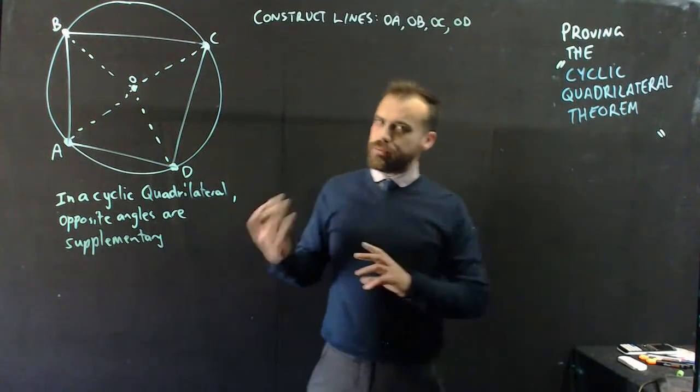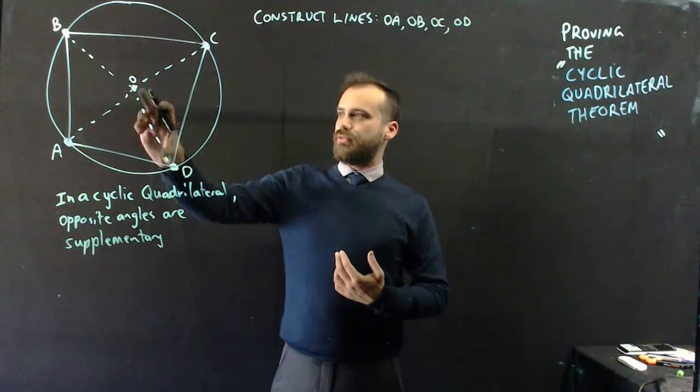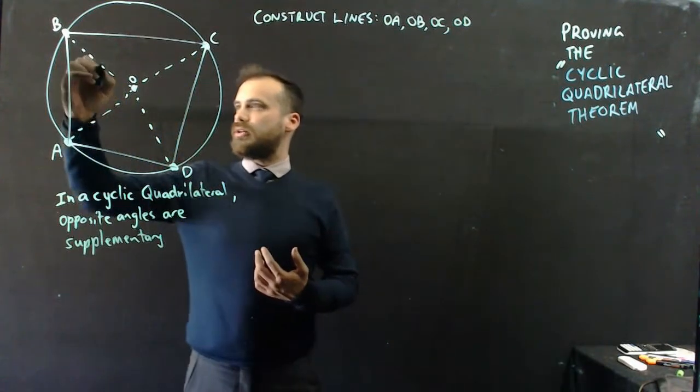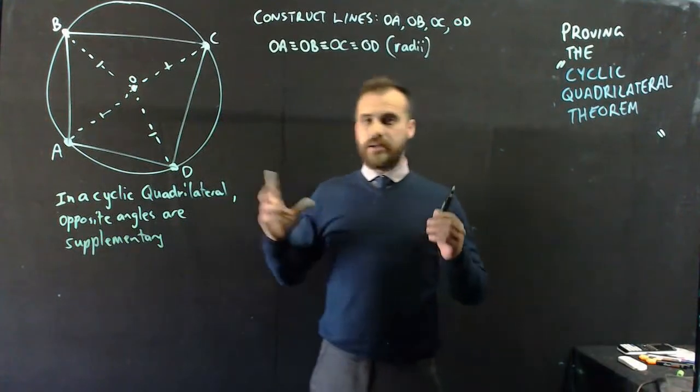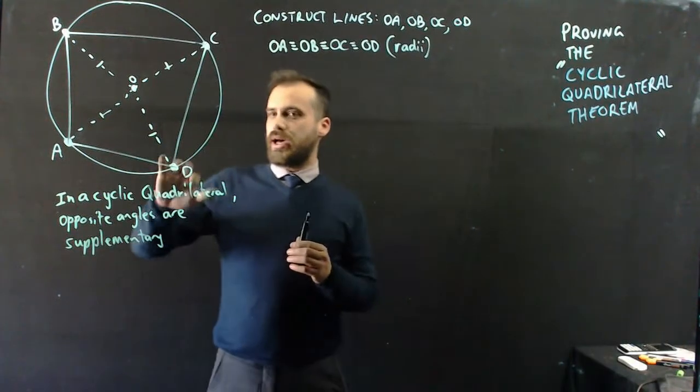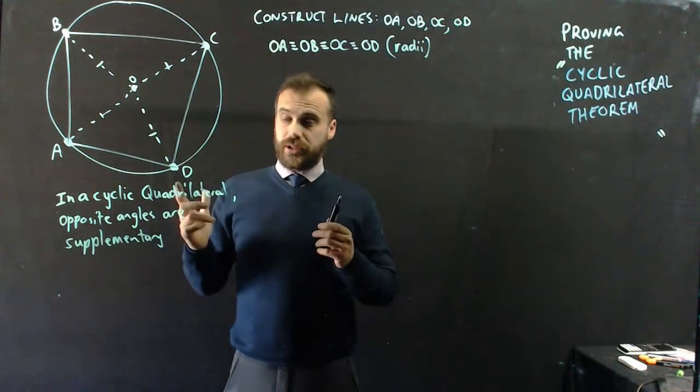And so by now, these proofs should be feeling fairly similar. You should notice that you've got four radiuses, so they are all equal. And then it should be clear that we have some isosceles triangles.